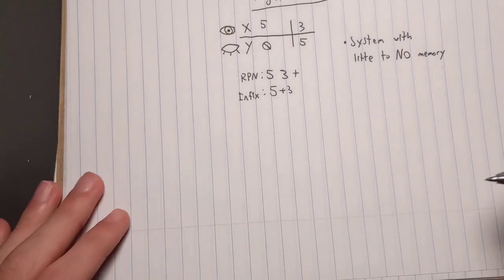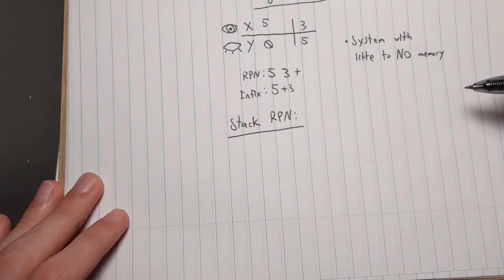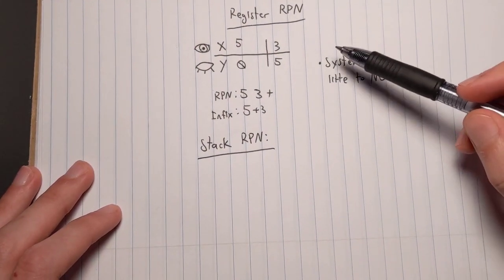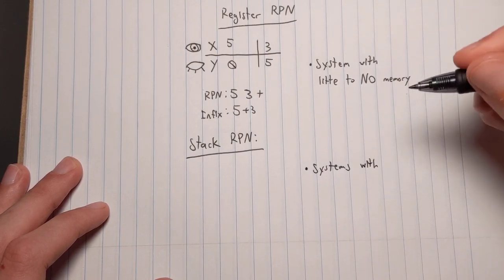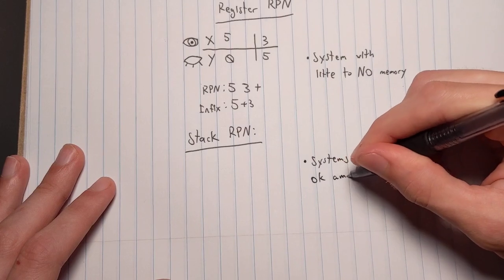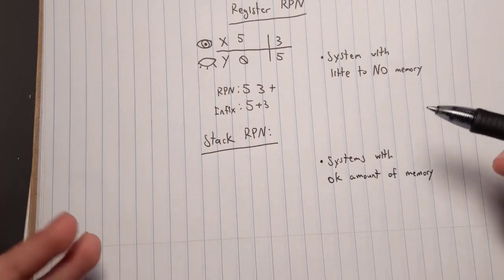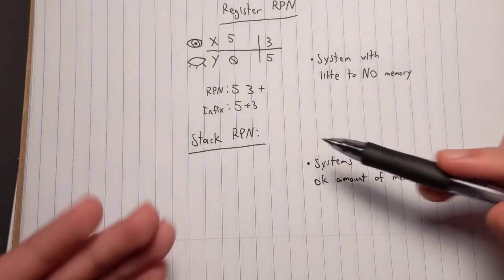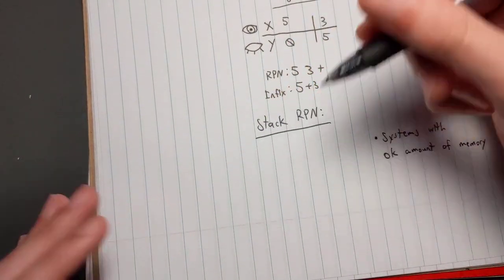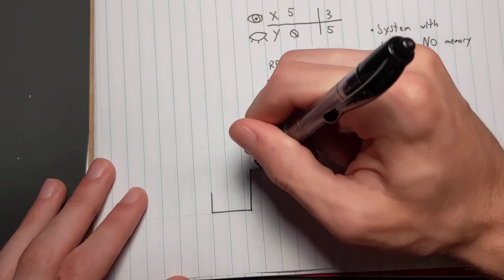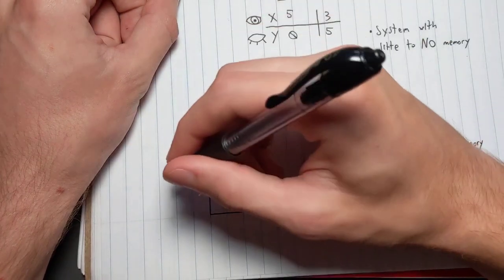That's really the basics of Register RPN. Most, if not all, HP calculators use register-based RPN. Register RPN is ideal for systems with little to no memory — very simple, cheap calculators with very little memory. The other type is Stack RPN, which is for systems with a more adequate amount of memory — anywhere from okay to a ridiculous amount — as long as it has a decent amount, it can run stack-based RPN.